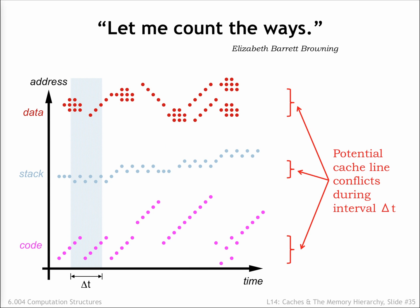How many ways do we need? We'd like enough ways to avoid the cache line conflicts we experienced with the direct map cache. Looking at the graph of memory accesses vs. time, we see that in any time interval there are only so many potential address conflicts to worry about. The mapping from addresses to cache lines is designed to avoid conflicts between neighboring locations, so we only need to worry about conflicts between different regions. In the example shown here there are three such regions, maybe four if you need two data regions to support copying. The point is that a small number of ways should be sufficient to avoid most cache line conflicts.